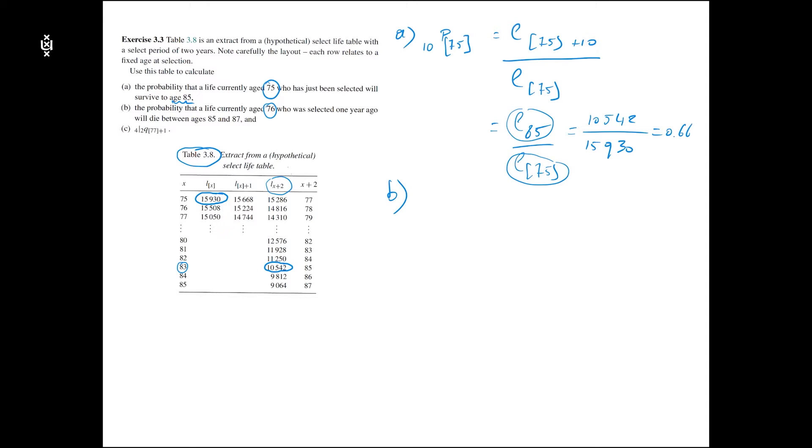Now we are doing a mortality probability so I put a Q here. The age is 76 but I write that the selection was at age 75 and now we are one year later.